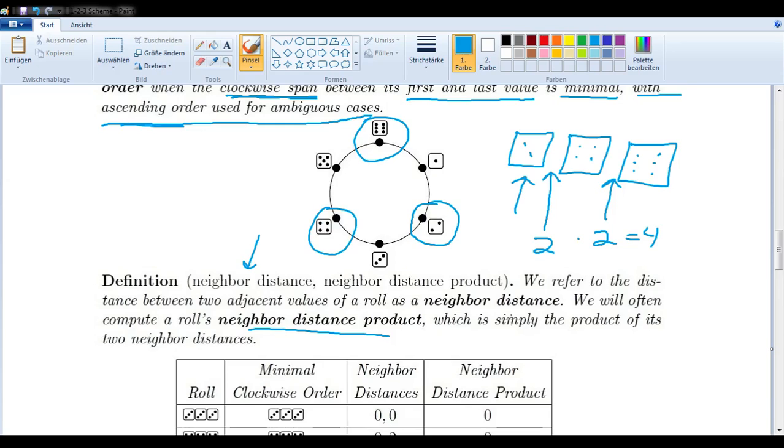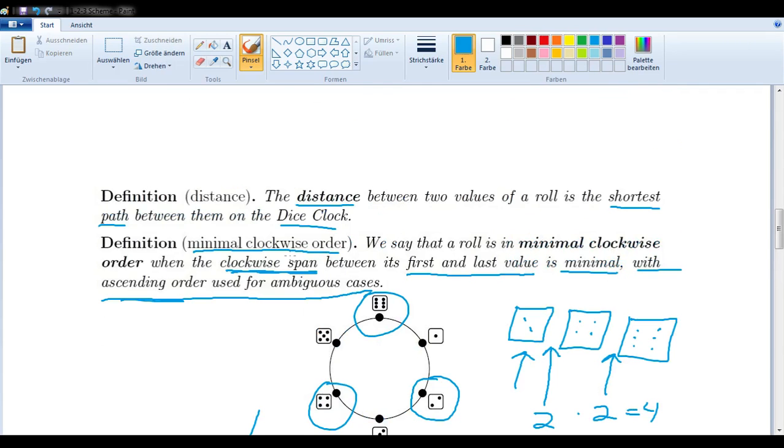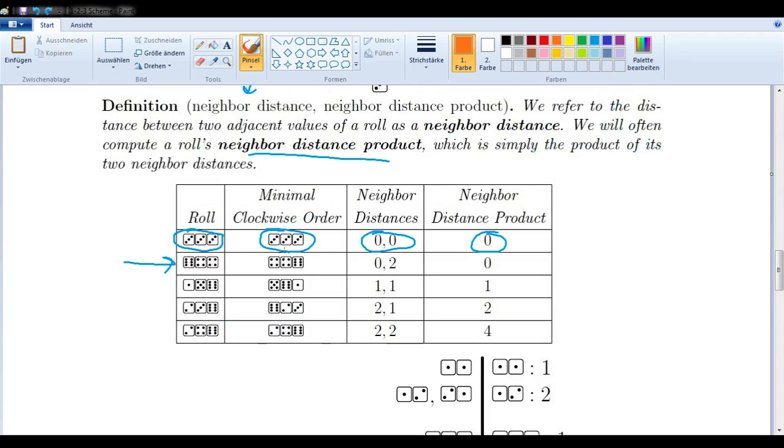Let's look at a couple of examples maybe. So if we rolled a 3,3,3, obviously the minimal clockwise order would be 3,3,3, since there is only one way to order that. And the neighbor distances would of course be zero and the neighbor distance product as well. If we rolled a 6,4,4, then we need to find out what the minimal clockwise order would be. If we have a six and four and four, well, the smallest span would be this one, because if we started here, that takes us too far afield. So we have 4,4,6 as our clockwise order.